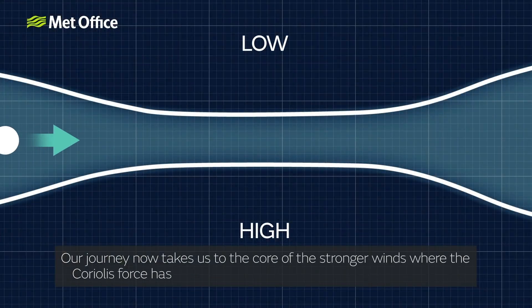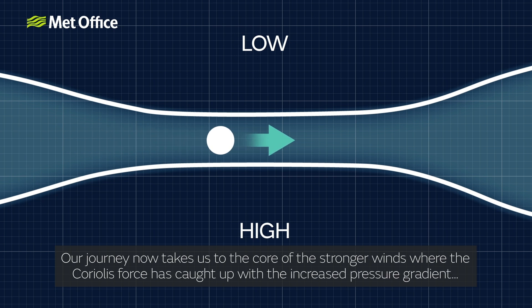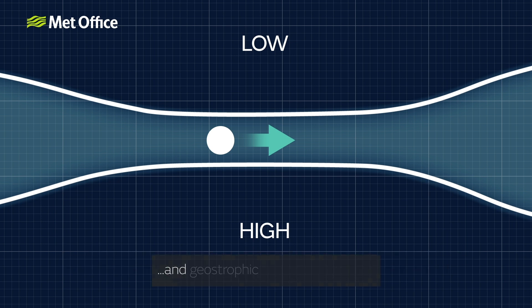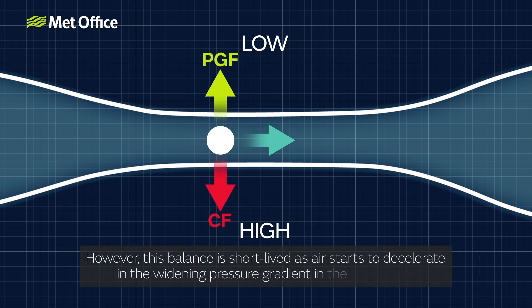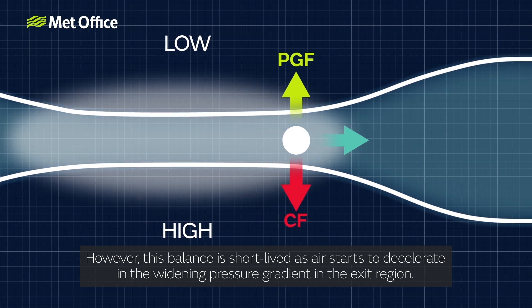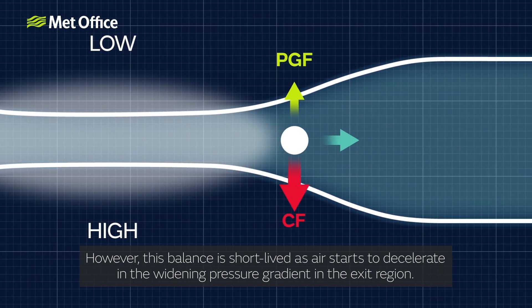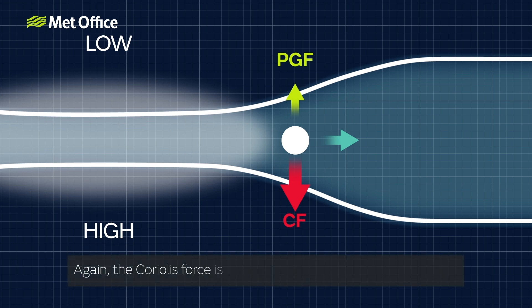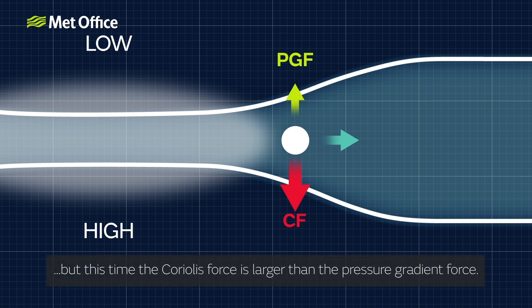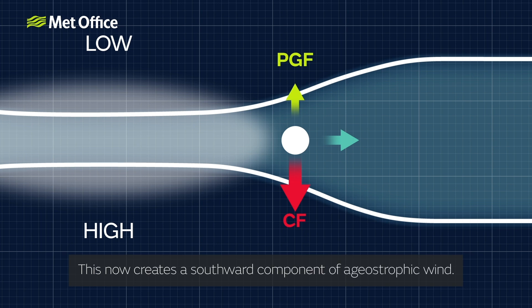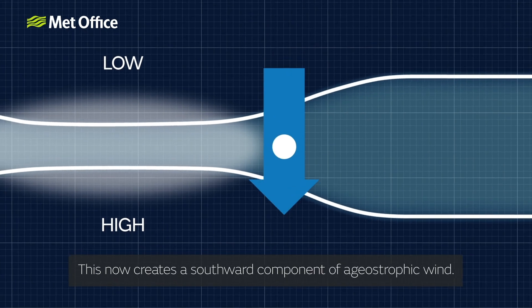Our journey now takes us to the core of the stronger winds, where the Coriolis force is caught up with the increased pressure gradient, and geostrophic balance is restored. However, this balance is short-lived, as air starts to decelerate in the widening pressure gradient in the exit region. Again, the Coriolis force is slow to respond, creating an imbalance — but this time the Coriolis force is larger than the pressure gradient force. This now creates a southward component of the ageostrophic wind.